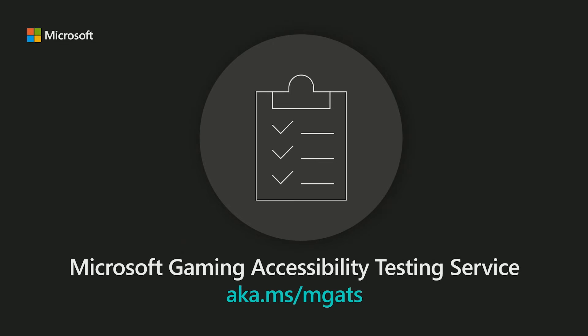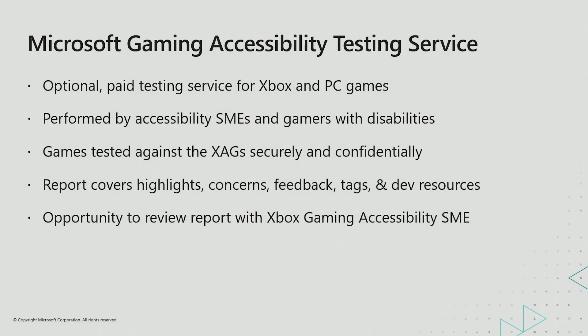Information on this service can be found at aka.ms/mgats. The Microsoft Gaming Accessibility Testing Service is an optional, paid testing service for Xbox and PC games that was created about a year ago based on requests from third-party developers asking the gaming accessibility team at Microsoft to review their content and provide feedback. In the spirit of the community's 'nothing-about-us-without-us' mantra, the program tests games using a combination of accessibility subject matter experts and gamers with disabilities. Games are tested against the Xbox Accessibility Guidelines using the same secure and confidential testing procedures that Xbox certification uses to test pre-release titles.